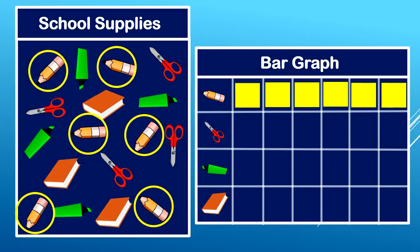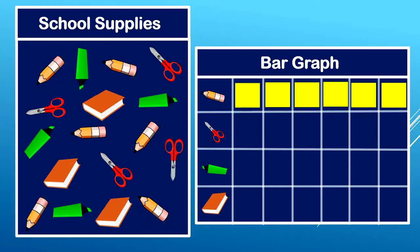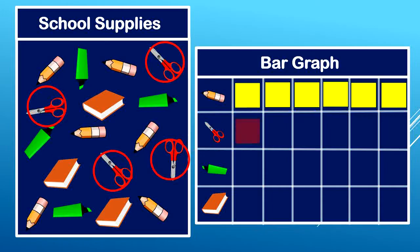Now let's count our scissors. One, two, three, four. Four pairs of scissors. Those are going to go right here in our bar graph: one, two, three, four.